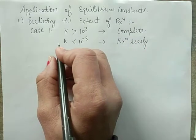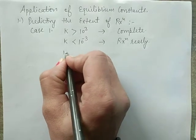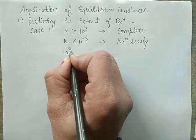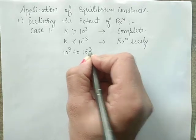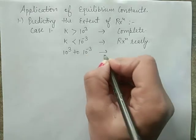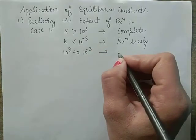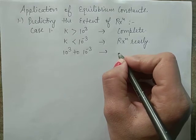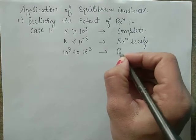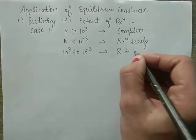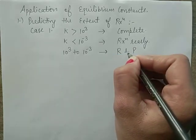If the K value lies between 10³ and 10⁻³, then considerable amounts of both reactants and products are present — both reactants and products are present.